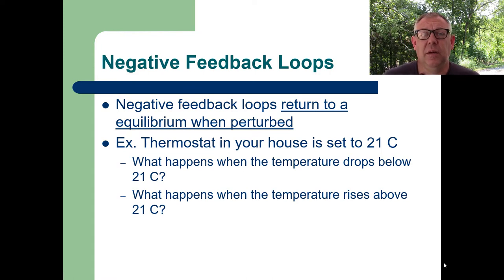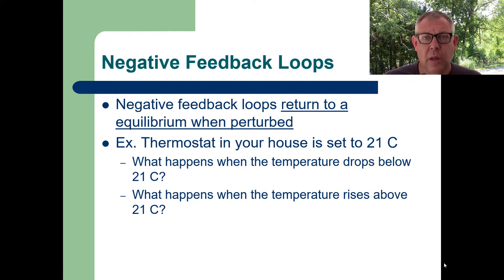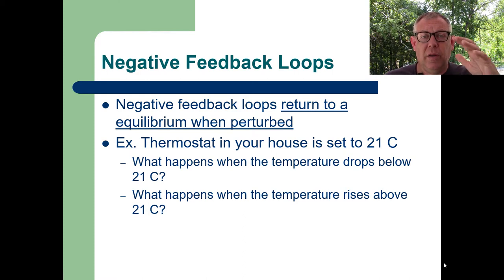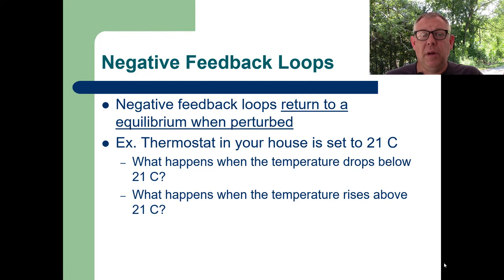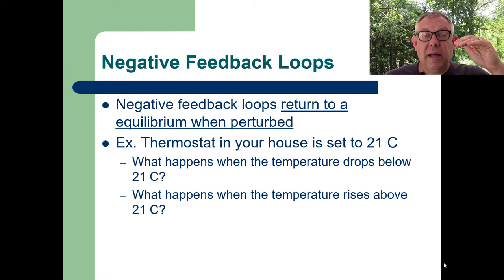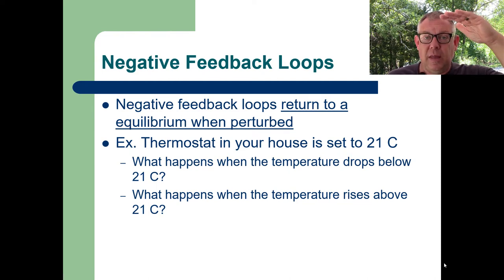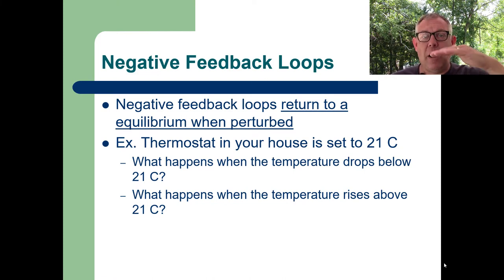The classic example is the thermostat in your house. Most thermostats are set to around 21°C. If it's cold outside and your house gets below 21, the thermostat tells the heater to kick on and the house starts to warm up. When the house gets up to 21, the thermostat tells the heater to shut off. If it gets hot and the house rises above 21, the thermostat tells the air conditioning to kick on and the house cools down. When it gets back to 21, the thermostat tells the air conditioner to kick off. No matter which way you move off that equilibrium, you get pushed back. That's a negative feedback loop.